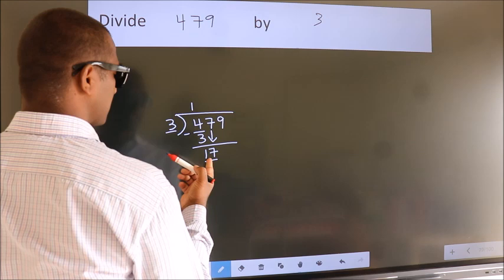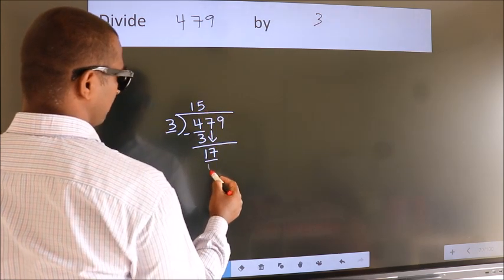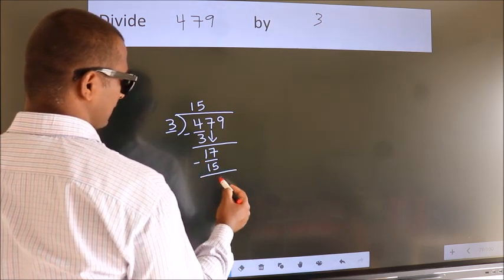A number close to 17 in 3 table is 3 5s 15. Now we subtract. We get 2.